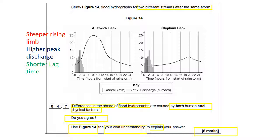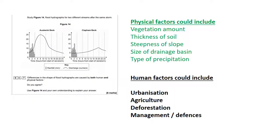All you have to do is explain why Oswick Beck could be a different shape. Physical factors include the amount of vegetation, the thickness of the soil, the steepness of the slope, the size of the drainage basin, and the type of precipitation. Thicker soil means more infiltration can take place before the soil saturates, so there's less surface runoff and water reaches the river more slowly. For steepness of slope, the steeper the slope, the faster water runs down it due to gravity, so water reaches the river faster. Steep slopes also generally have thin soils because soil is washed away by rain, meaning less infiltration and more surface runoff.